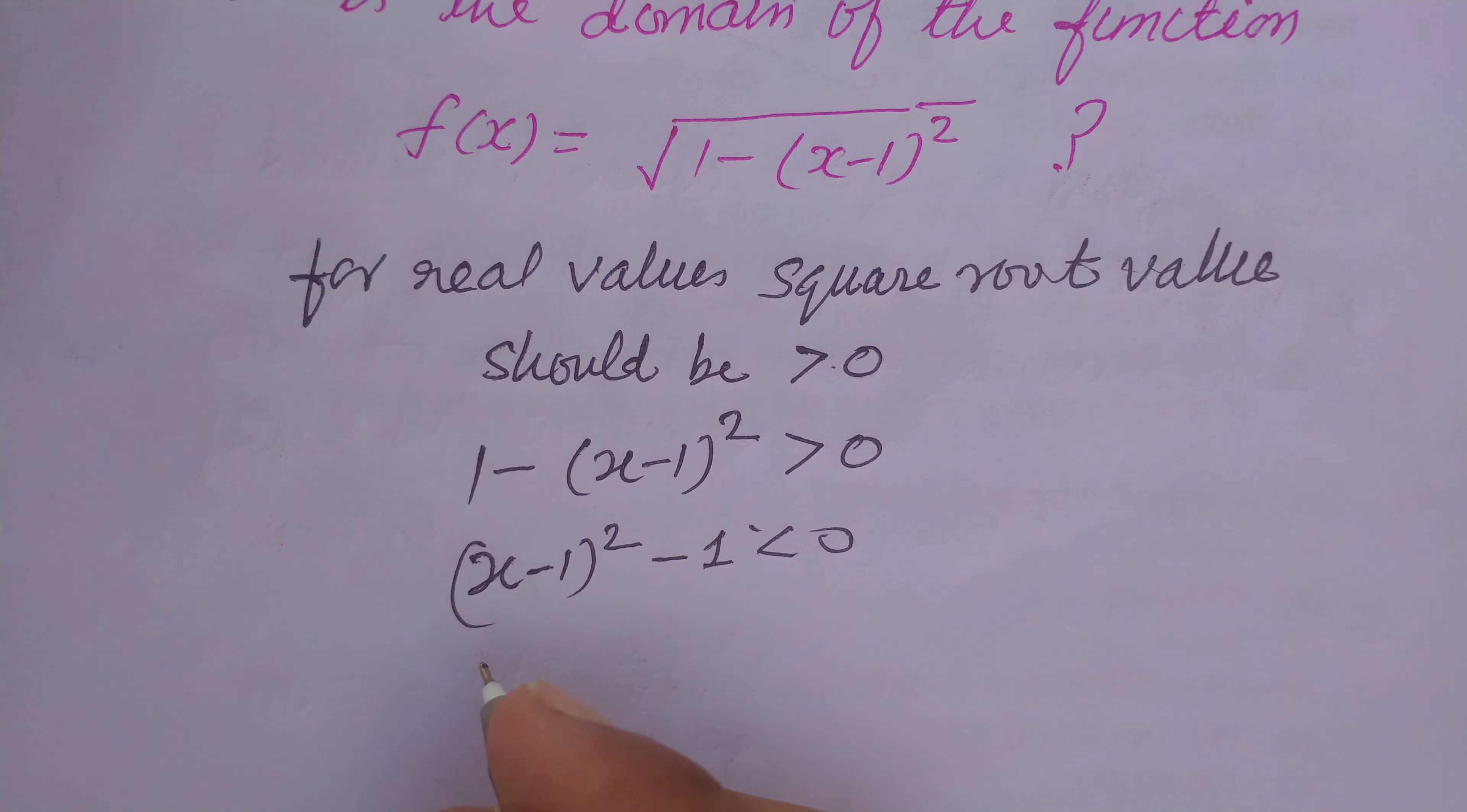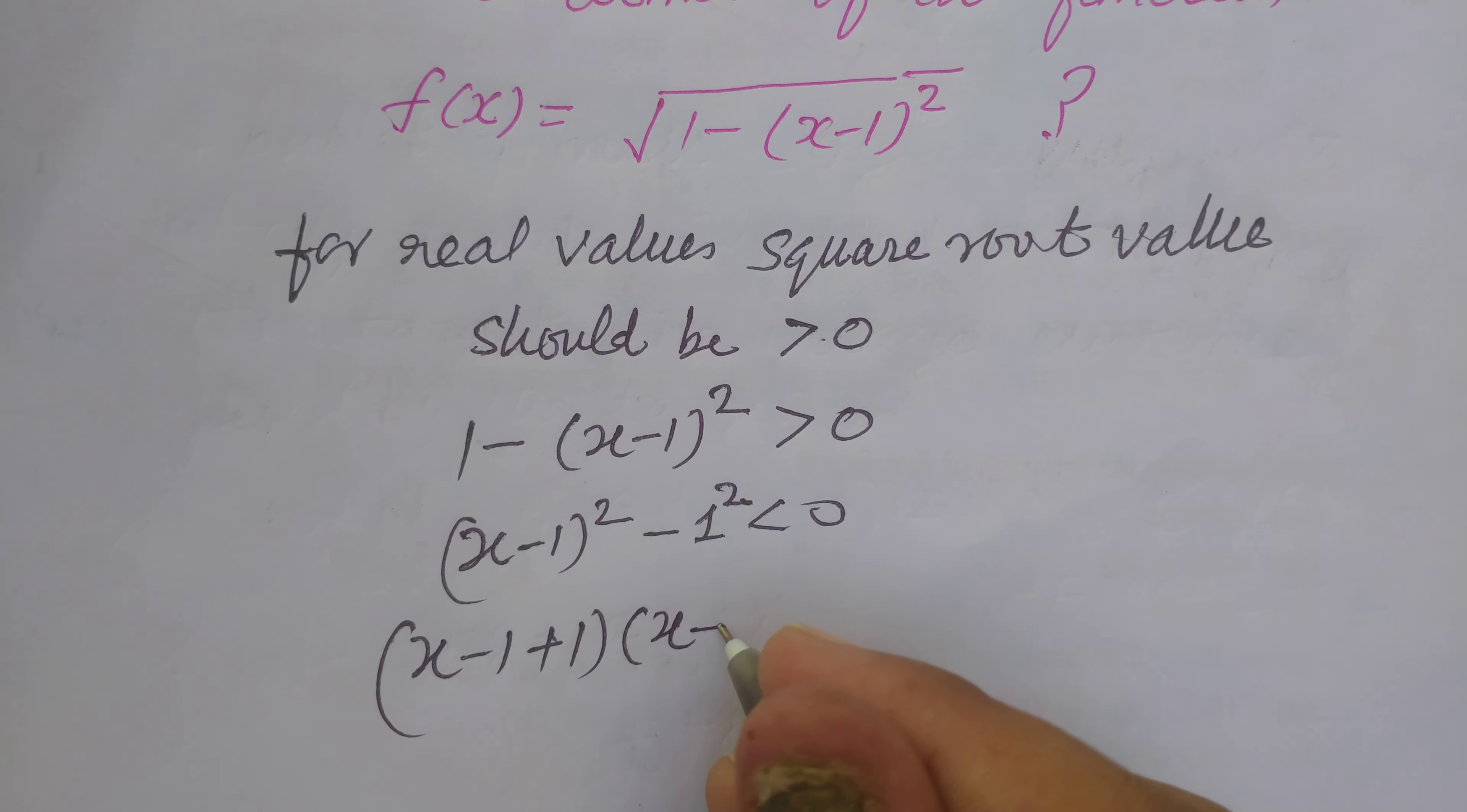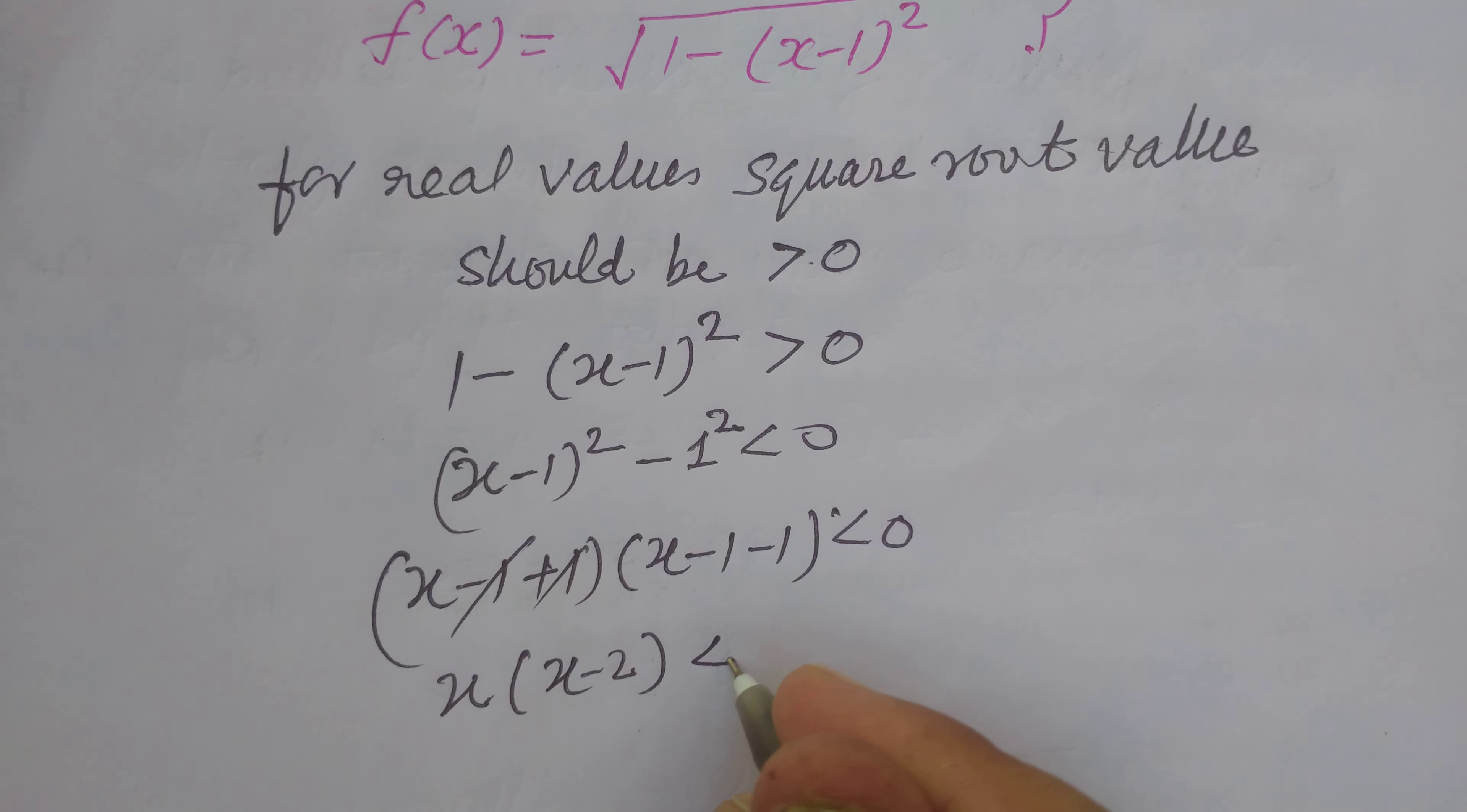Using the difference of squares formula a² - b², we get (x-1+1)(x-1-1) is less than zero. This simplifies to x(x-2) is less than zero.